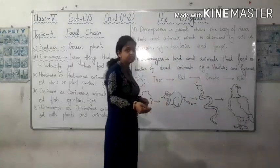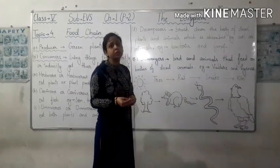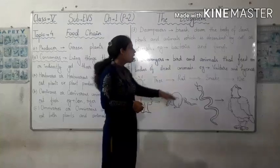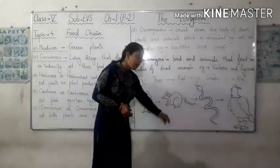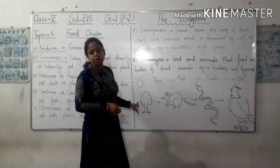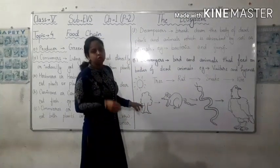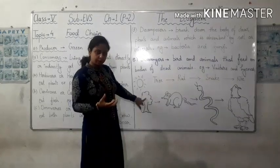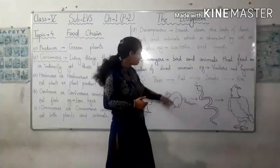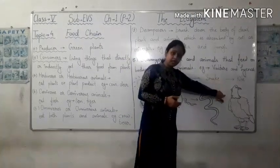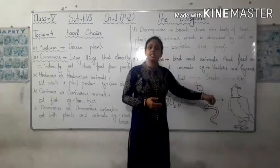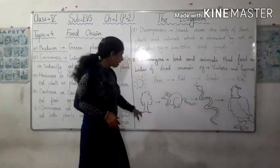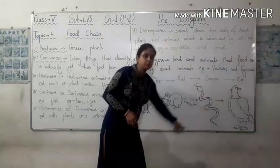When the hawk dies, it is broken down into minerals by decomposers like fungi or bacteria. Those minerals mix with the soil and are again absorbed by plants. So here you can see a cycle is going on: trees produce food, the product of trees is eaten by rat, rat is eaten by snake, snake is eaten by hawk, hawk dies and is decomposed by decomposers and mixed into soil, and that mineral is again taken by the tree. This is a continuous process.